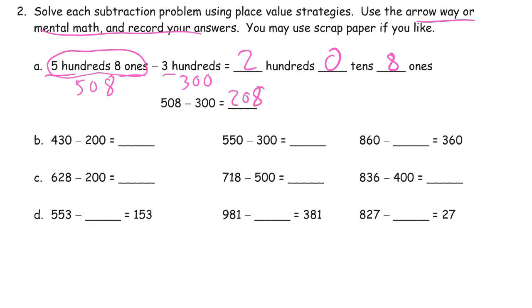430 minus 200. Subtract two hundreds. 230. 550 minus 300. We're just gonna look at those hundreds digits. 200 but we get to keep that 50. So it's 250.